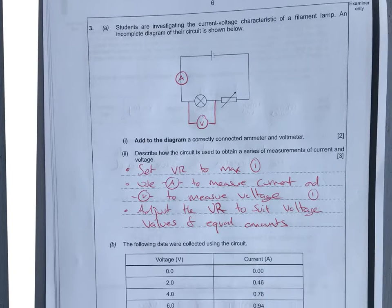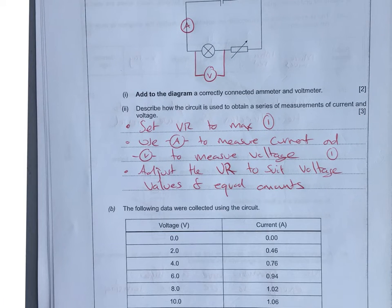For three marks give a brief method. We're going to set the VR, which stands for variable resistor, to maximum. What that does is allows no current to flow, so you're going to get zero current and voltage.